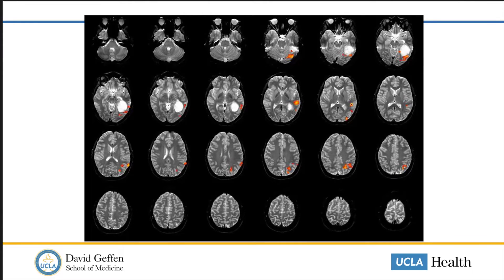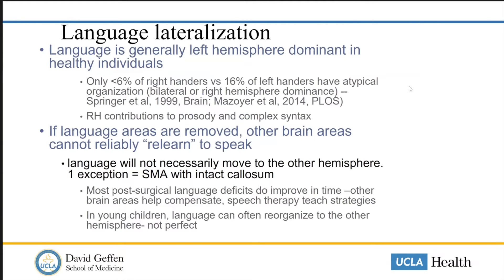In the majority of people, language is lateralized to the left hemisphere, and knowing where these active areas of brain cortex are relative to your tumor can help guide trajectory into a lesion for resection. Language is generally left-hemisphere dominant in healthy individuals — less than 6% of right-handers and 16% of left-handers have atypical organization. It's actually more common to be bilaterally represented in speech than to be right-dominant alone. If these critical areas of language are removed, other areas of the brain can't just relearn how to speak, so it's imperative to protect them or risk permanent aphasia.